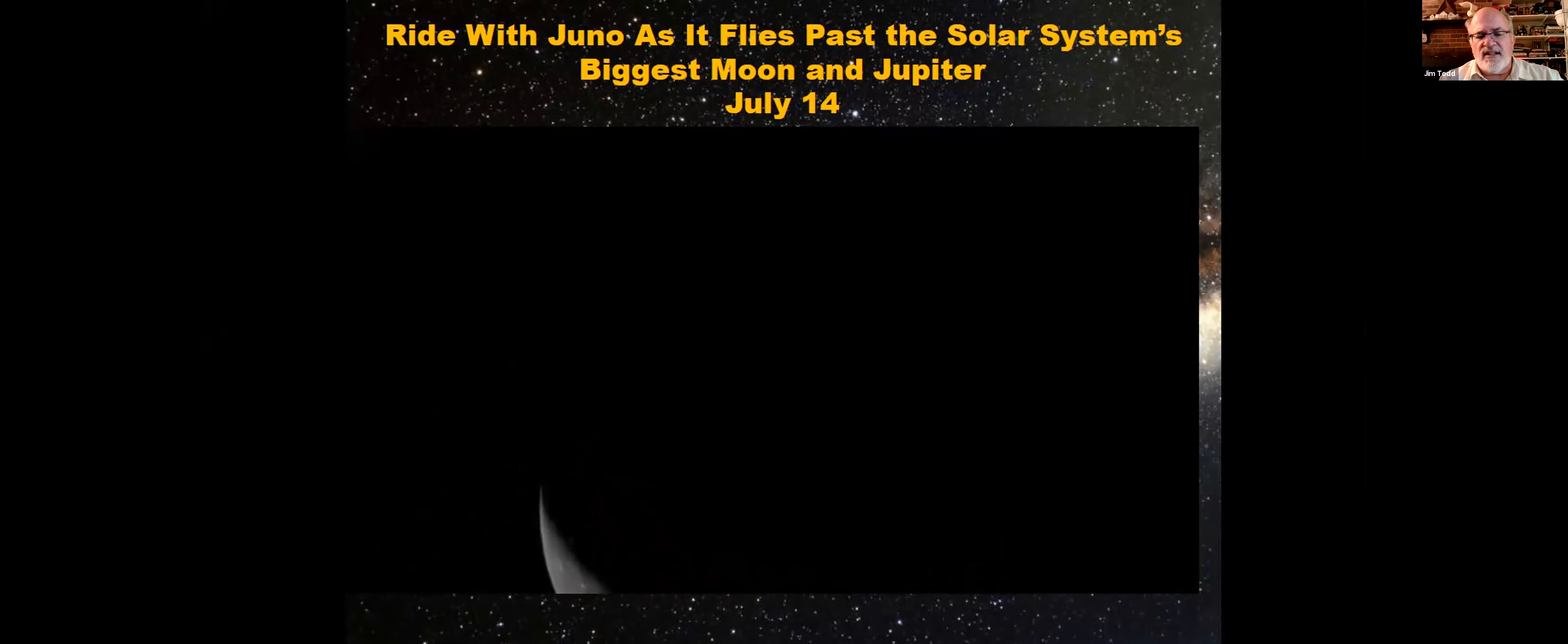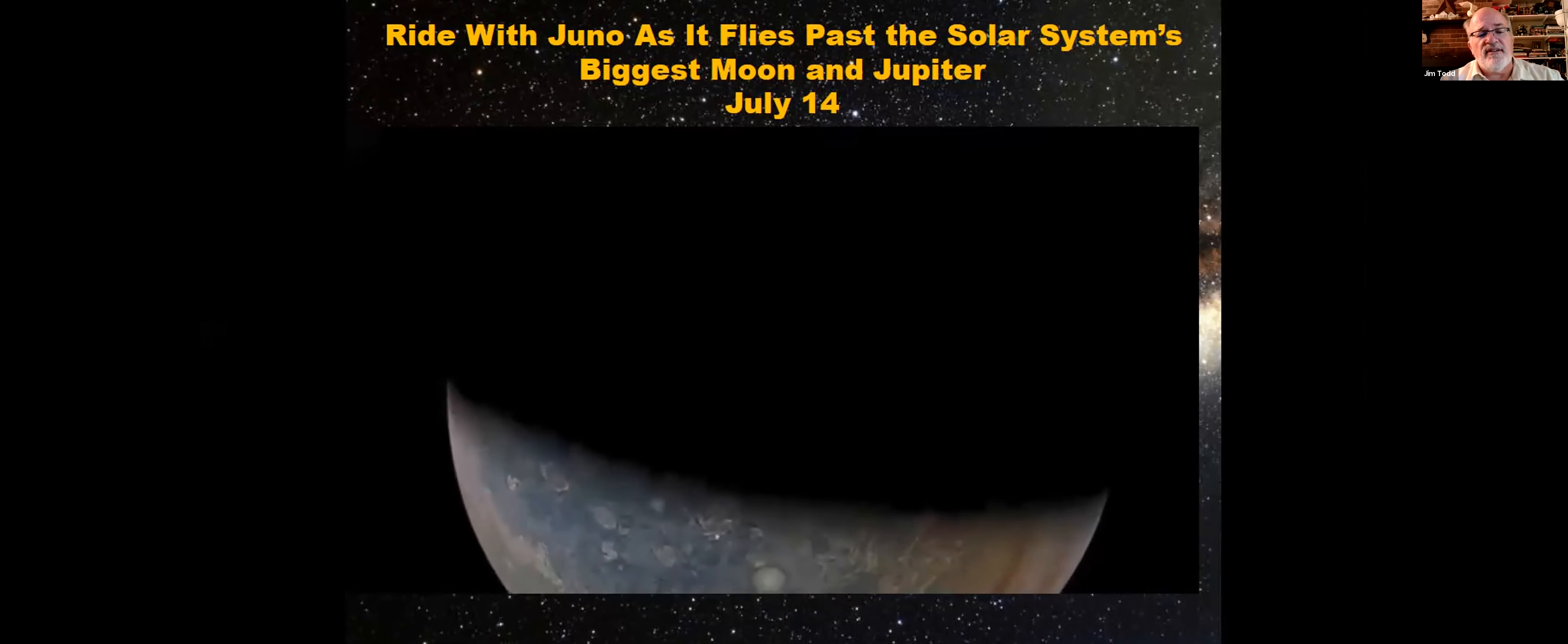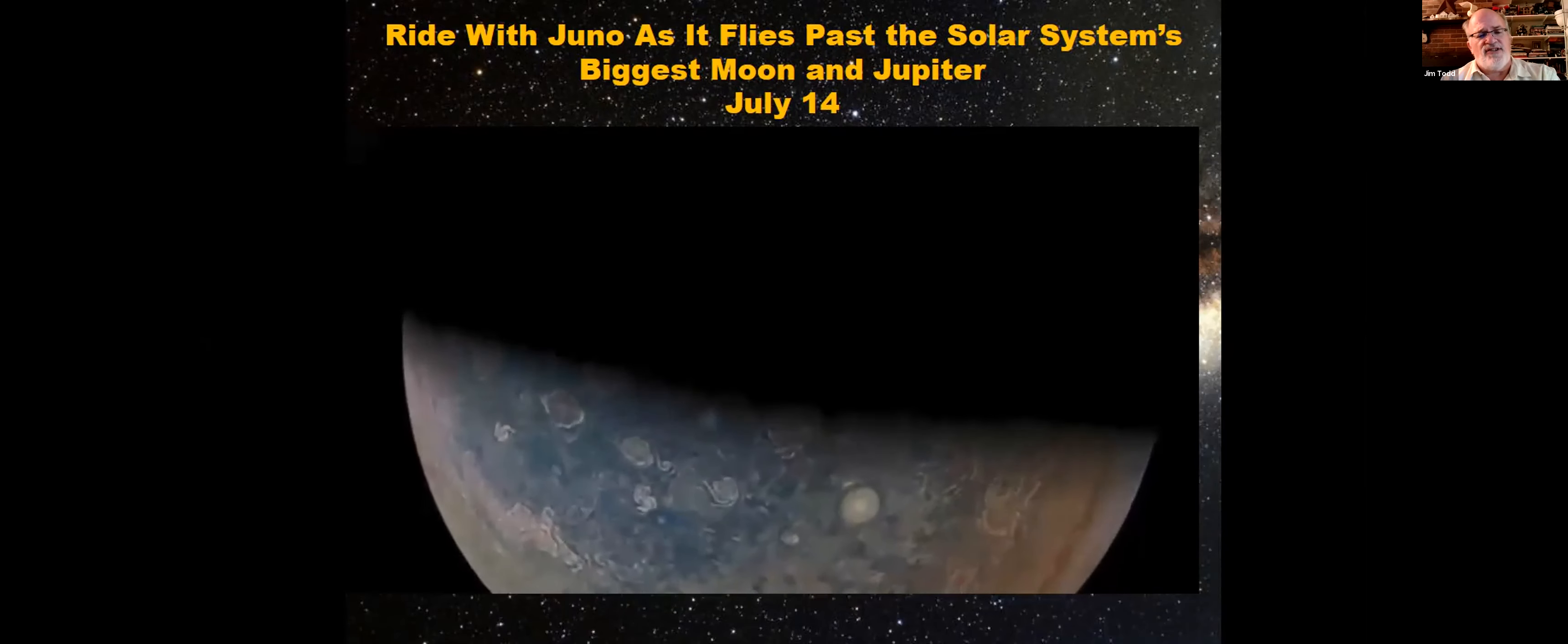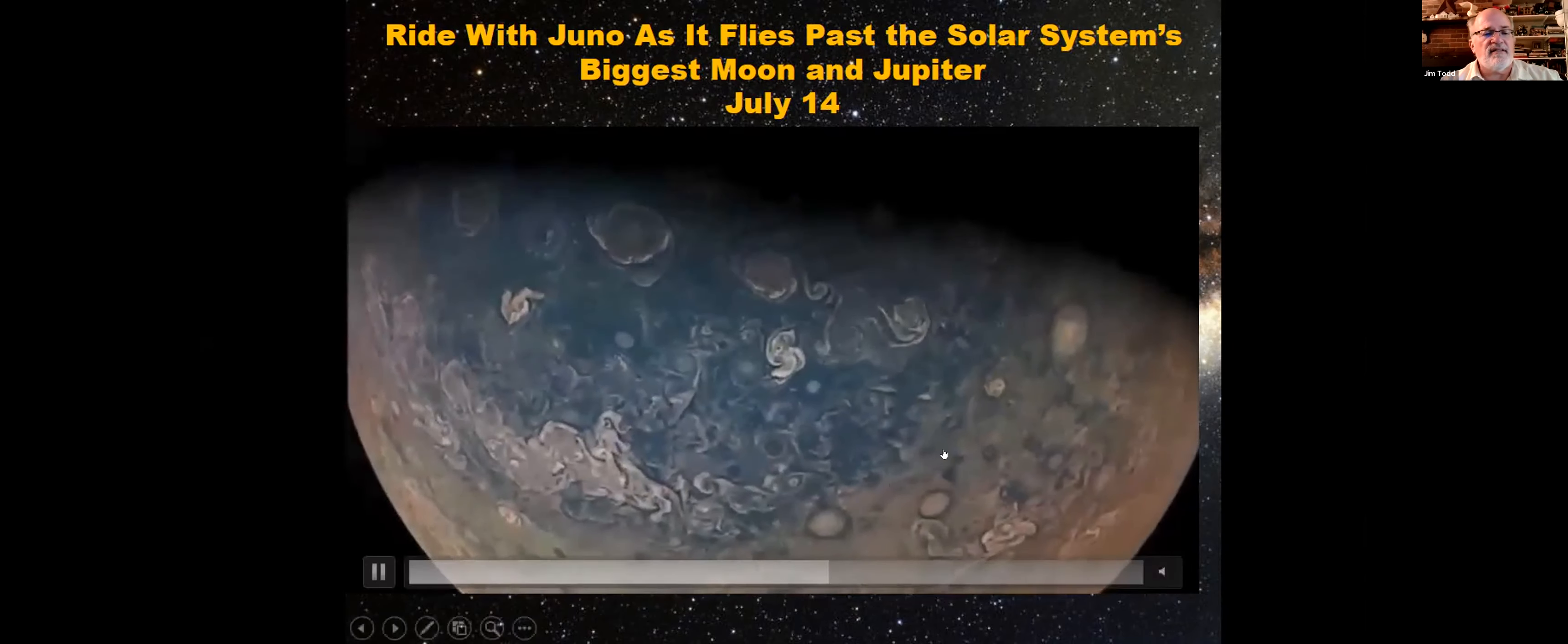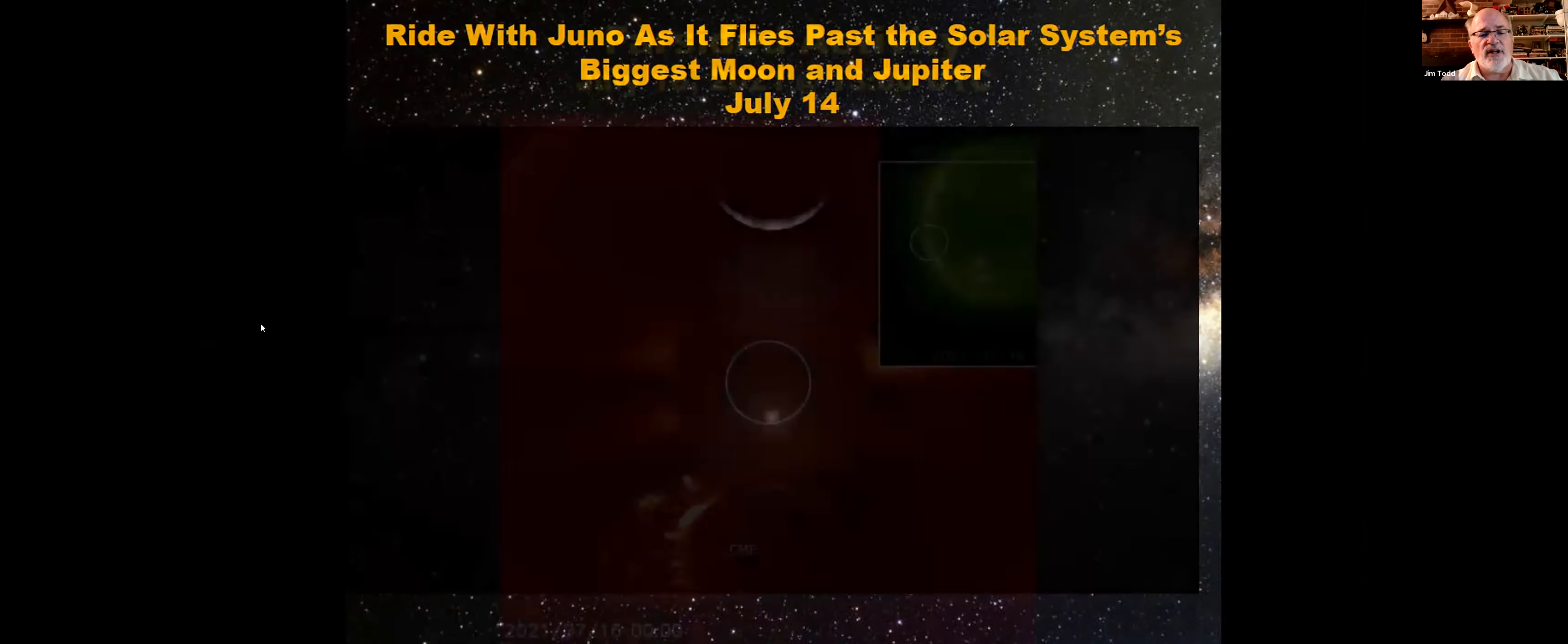Then it does the flyby of Jupiter and at the terminator where day and night meet, you actually see the lightning storms. If you look towards the left, look at that, you see the storms. That is pretty impressive. Then it starts to fly over the surface of Jupiter, we get more and more details. We're seeing some amazing stuff coming out from Juno.